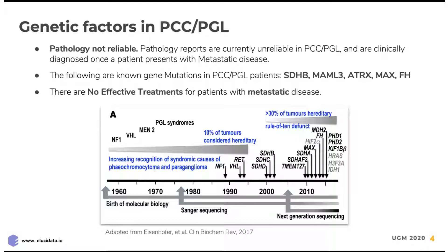What does give us a clue, however, is what kind of genetic mutation they have, such as a succinate dehydrogenase type B mutation. If a patient has metastatic disease, there are no effective treatments available. Therefore, such patients are looking for clinical trials or even chemotherapeutic regimens in order to reduce their disease burden.